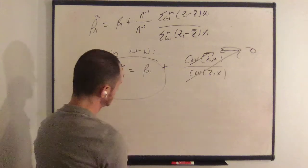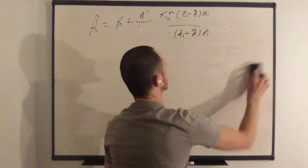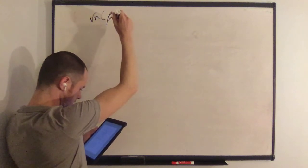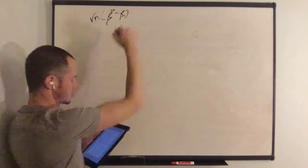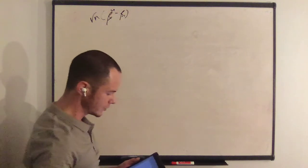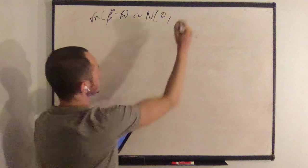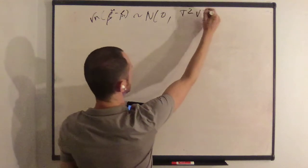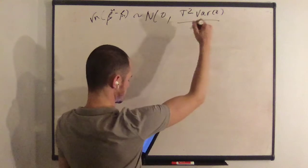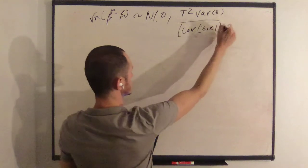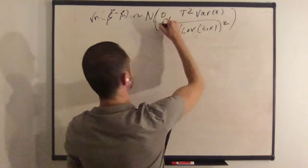Now we have some more work to do because we're trying to show that OLS is asymptotically efficient. The square root of n of beta 1 tilde minus beta 1, this thing is asymptotically normal with a mean of 0 and this variance sigma squared variance of z all over covariance between z and x squared.